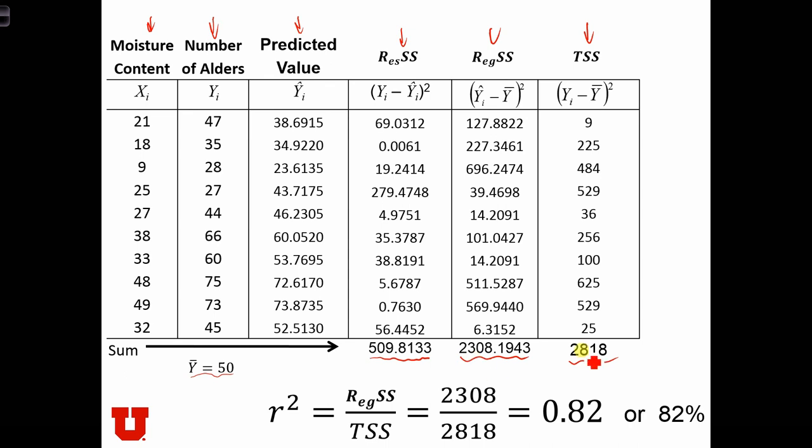By taking the ratio of regression SS over TSS, we compute an r-squared of 0.82, or 82%.